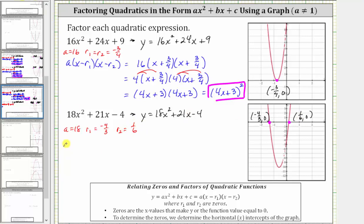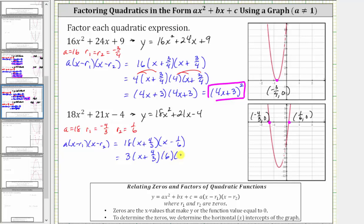In the form a times the quantity x minus r sub one times the quantity x minus r sub two, the expression equals 18 times the quantity x minus negative 4 thirds, which becomes x plus 4 thirds, times the quantity x minus 1 sixth. Again, this could be considered factored form, but we normally don't leave fractions in the binomials. So we multiply the first binomial by three and the second binomial by six, and notice that 18 is equal to three times six. Let's write this as three times the quantity x plus 4 thirds, times six times the quantity x minus 1 sixth. We'll distribute three to clear the fraction of 4 thirds, and distribute six to clear the fraction of 1 sixth.